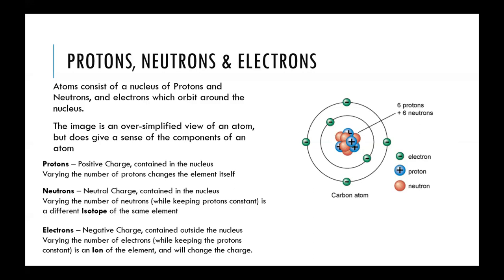In a neutral atom — a neutral element straight from the periodic table — the number of protons and electrons are the same. However, electrons can move around. This is where the actual chemistry happens: moving electrons between different atoms. That's how chemical reactions take place.